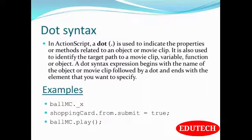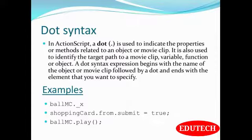In ActionScript, a dot is used to indicate the properties or methods related to an object or a movie clip. It is also used to identify the target path to a movie clip, variable, function, or object. A dot syntax expression begins with the name of the object or movie clip, followed by a dot, and ends with the element you want to specify. Examples: ballMovieClip._x, shoppingCart.form.submit = true, ballMovieClip.play.